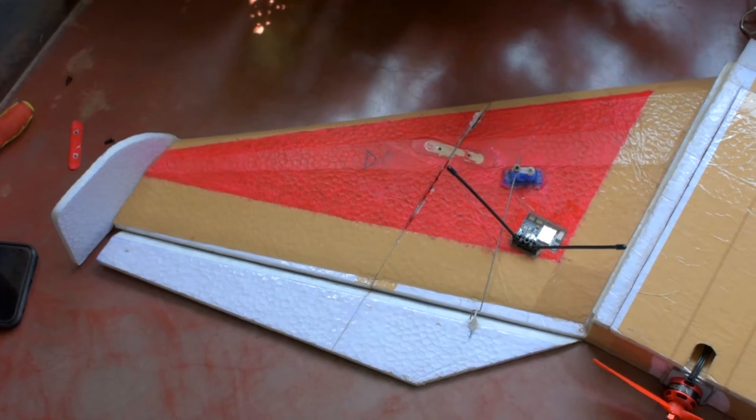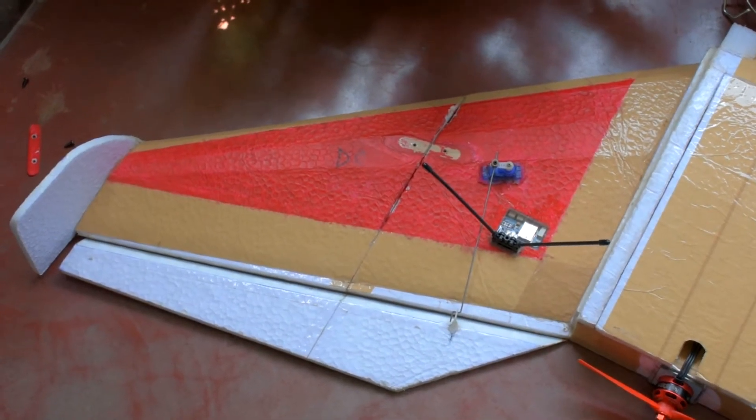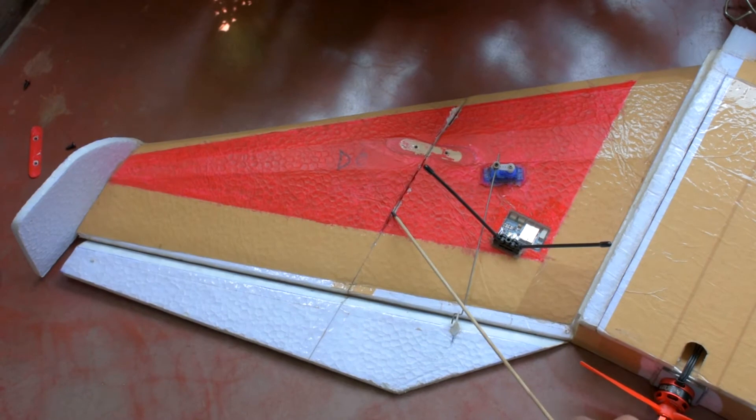For example, if the wingspan is 40 inch, which is mine, then the location of the hinge will be 10 inch from the wing tip.